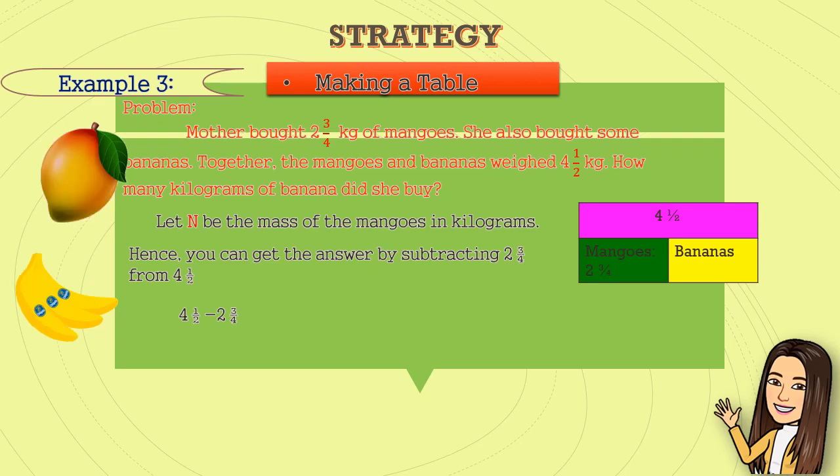Look at the fractions. They are unlike. Therefore, we need to look for its like fractions or we change it to similar fractions. One-half becomes two-fourths and three-fourths becomes three-fourths. Now, we have two-fourths and three-fourths. Applying the steps in subtracting mixed numbers, we will look for the whole numbers and the fractions.